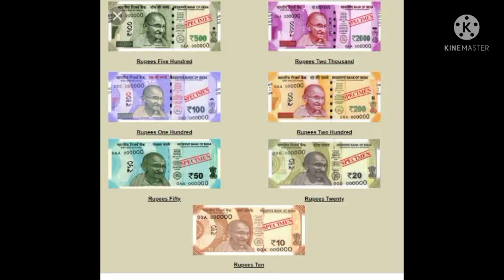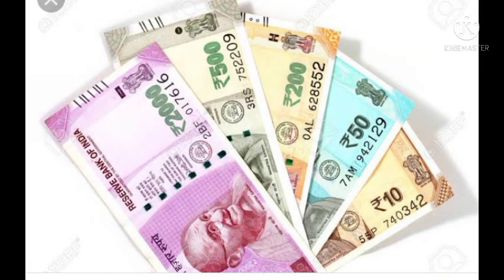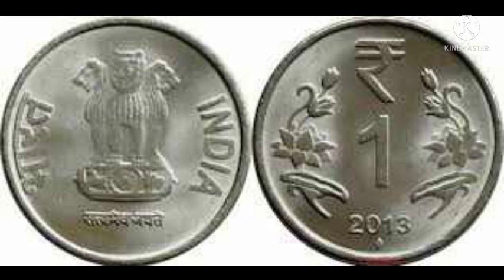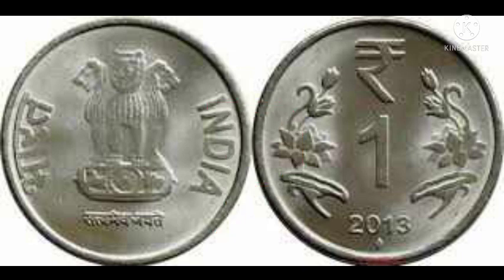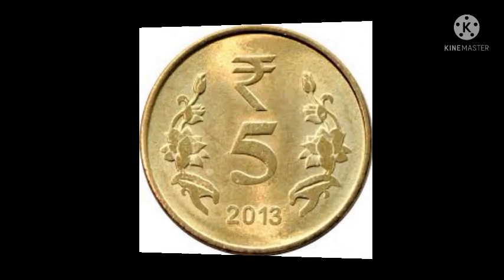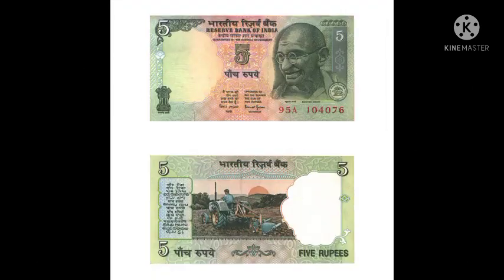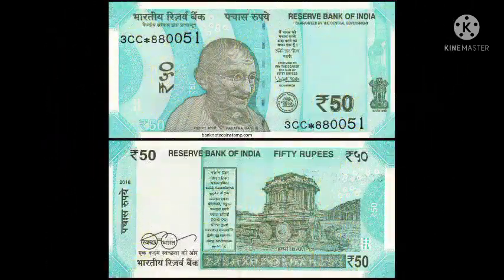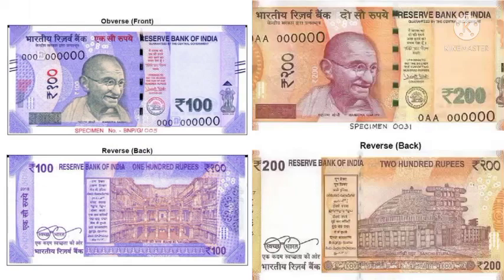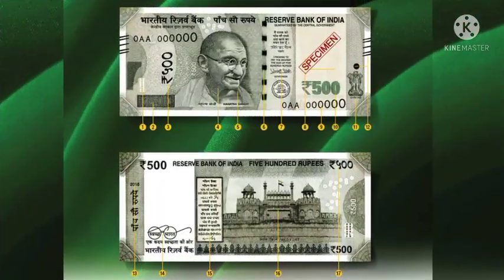Indian currency is in the form of rupees and paisa. Rupees is denoted by this symbol and paisa is denoted by small 'p'. In India, the coins we generally use are: one rupee coin, two rupee coin, five rupee coin, and ten rupee coin. The notes we use are: five, ten, twenty, fifty, hundred, two hundred, five hundred, and two thousand rupee notes.